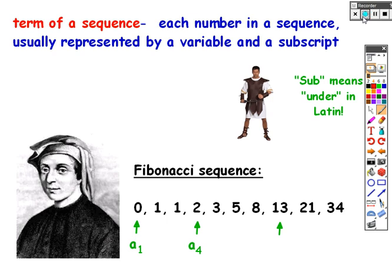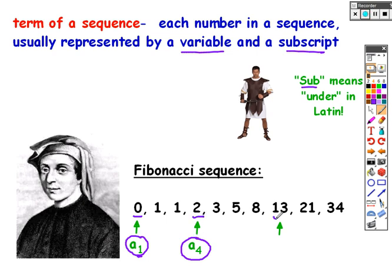We want to be able to refer to different terms in the sequence, so usually if I'm talking about a term I use a variable and a subscript — that tiny little number next to the variable. If I want to talk about the first term, the value of the first term would be a sub 1. If I ask what a sub 4 is, this means what is the value of the fourth term in the sequence, which would be 2. So what would be the eighth term? Well, a sub 8, the value of the eighth term, would be 13.